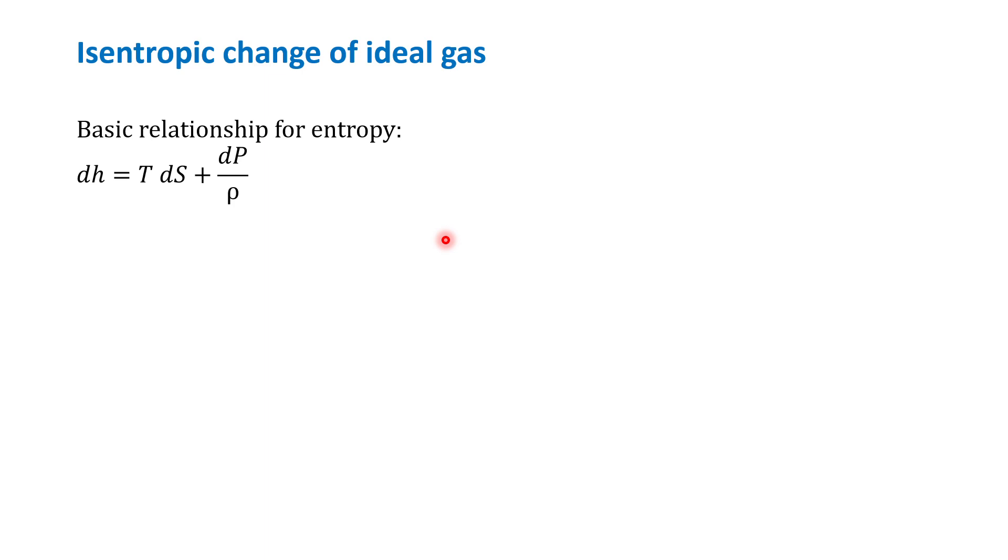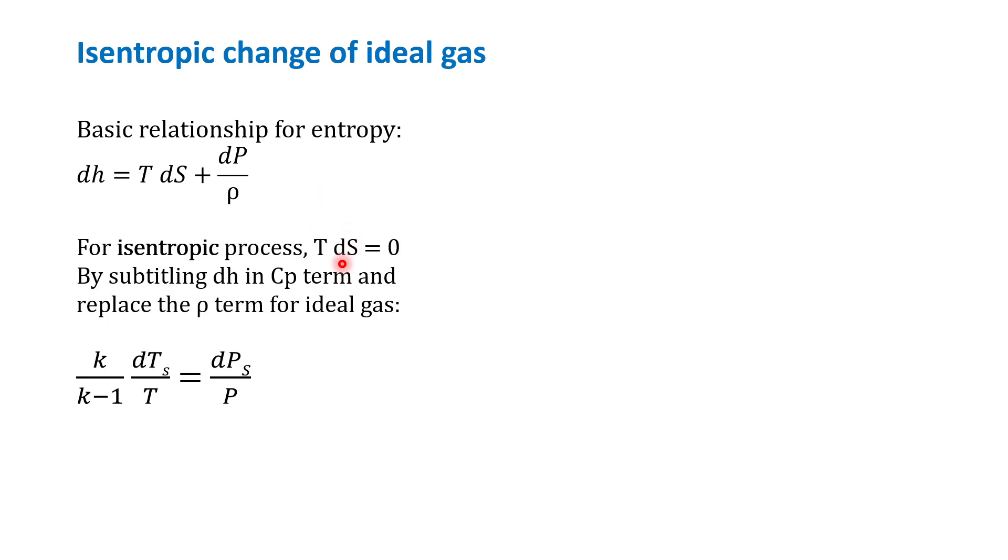We will use the equation later on, but before I move on to analyzing the system, let's recall what is the isentropic change in ideal case. It starts with the definition of entropy, dh equals T ds plus dP over ρ. This is the definition of the entropy. Now we know that for the process that is isentropic means that the entropy change equal to zero. If ds here equal to zero, basically this form is equal to zero.